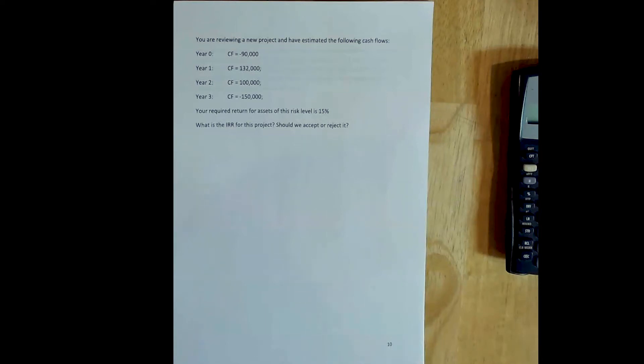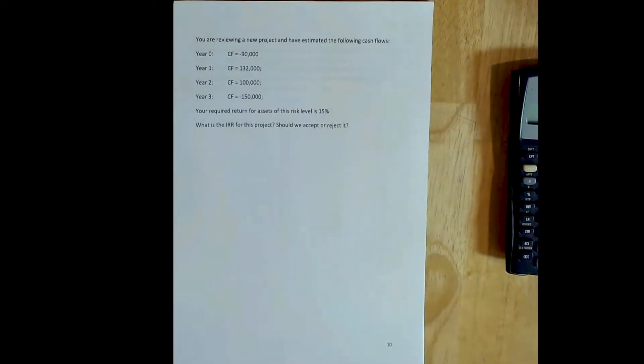If the net present value rule is the golden rule of project decision making, then the internal rate of return rule is the silver rule. As I mentioned in the lecture, the reason this is the case is because there are two distinct scenarios in which the internal rate of return rule can give the wrong answer.